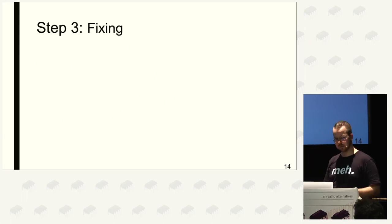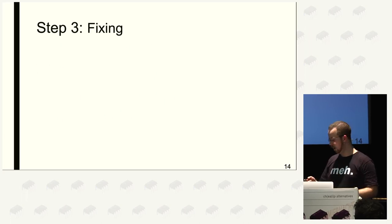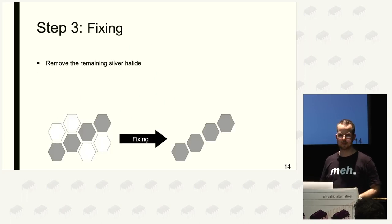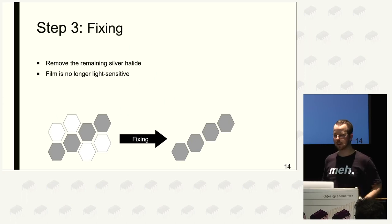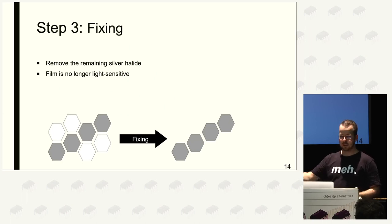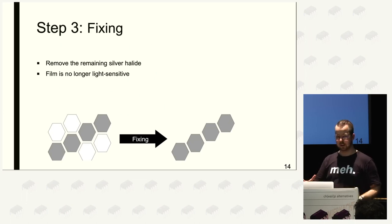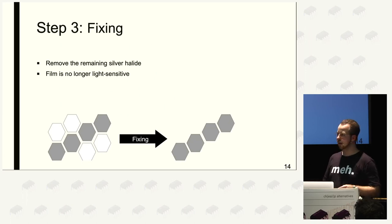Next is fixing. We already have the elemental silver image, but there is still unexposed silver halide surrounding it on the film. The fixer chemically removes all the remaining silver halide from the film. The great advantage is that at this point the film is no longer light-sensitive — all the remaining silver halide is in the waste liquid we pour out. Now we can open the development tank and work in normal light.